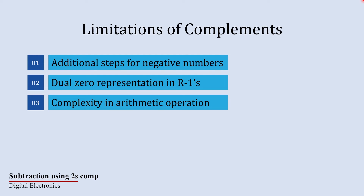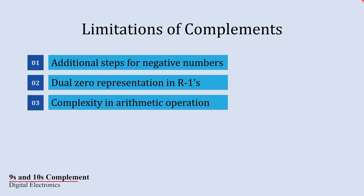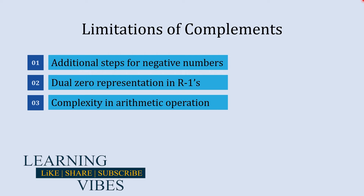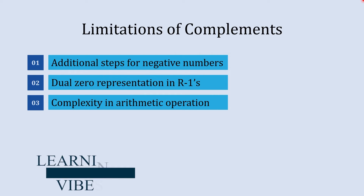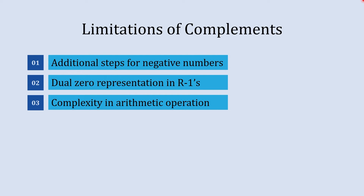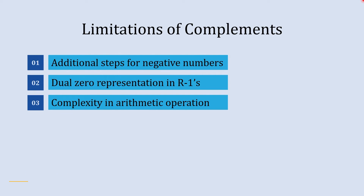Due to the presence of both positive and negative zero representations, performing arithmetic operations using r-1's complement can be complex. This complexity arises especially in subtraction, where the existence of both +0 and -0 creates ambiguities, making calculations prone to errors. Despite these limitations, there are still practical real-life uses for these complements.